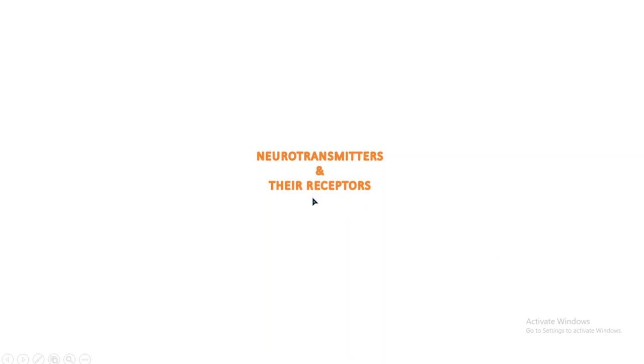Hi everyone, today I am going to talk on neurotransmitters and their receptors. Neurotransmitters can be defined as chemicals which are synthesized in the neuron, released in the synaptic cleft, and upon release bind to the receptor present on the post-synaptic membrane. Here, ultimately the post-synaptic cell will give a response to the neurotransmitter.